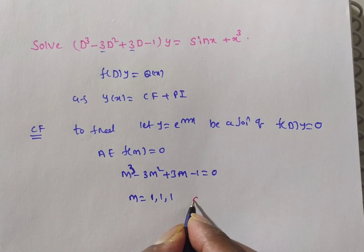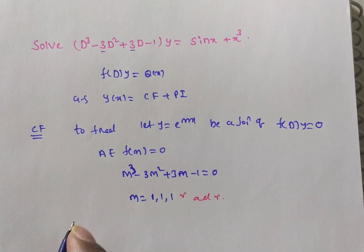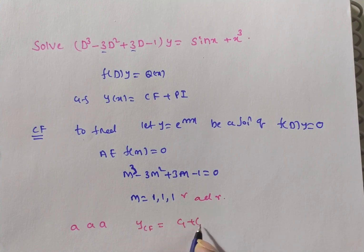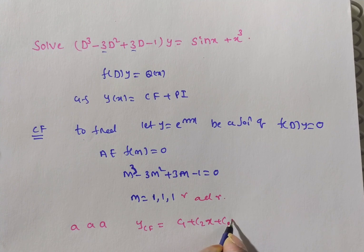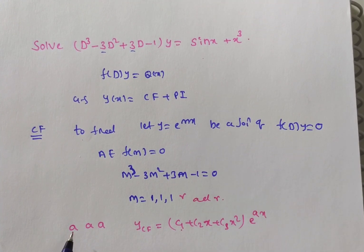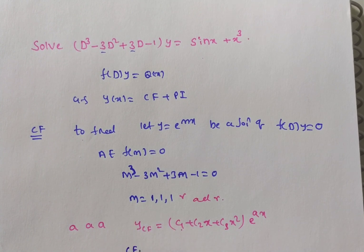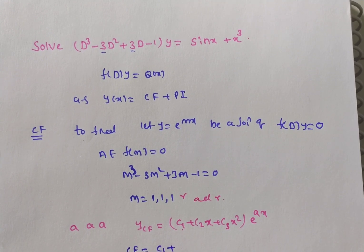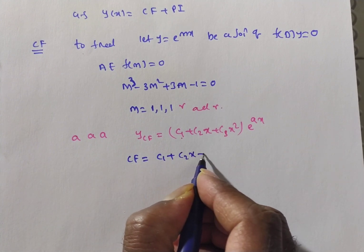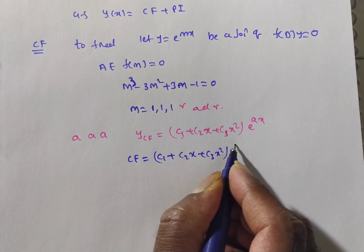The roots are real and repeated. Whenever roots are of the form a, a, a — real and repeated — the complementary function is (c₁ + c₂x + c₃x²)e^(ax). Since 1 is repeated, the complementary function is CF = (c₁ + c₂x + c₃x²)e^x.